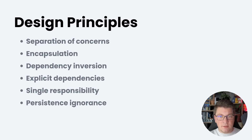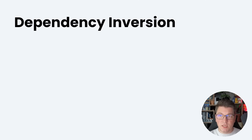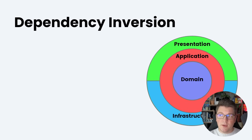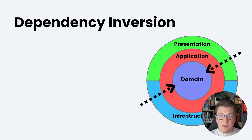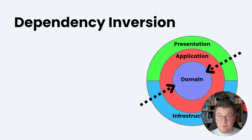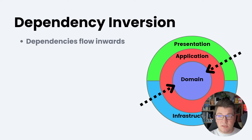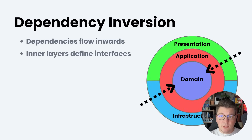Another very important design principle that clean architecture follows is dependency inversion. The outer layers are allowed to reference the inner layers in the architecture — so the application layer can reference the domain, the infrastructure layer can reference the application, and the infrastructure and presentation layers can reference each other because they sit on the same level of abstraction. The dependencies flow inwards, and the inner layers define interfaces or abstractions.